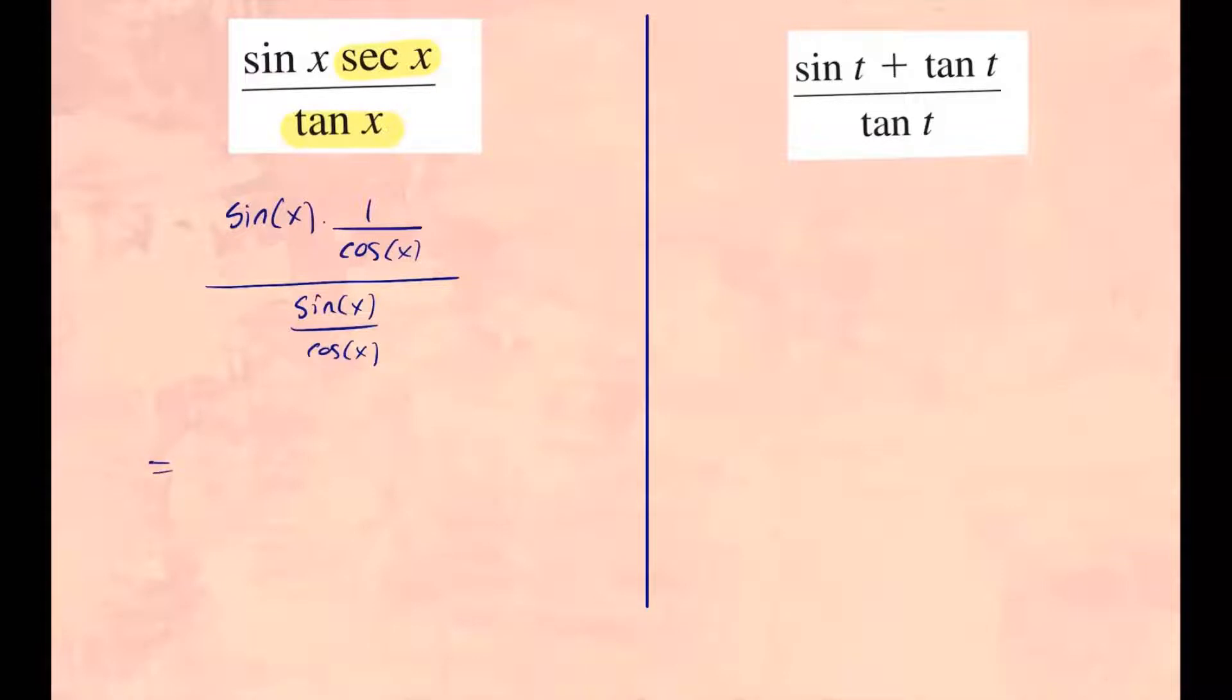On top, you have sine over cosine on top. And on the bottom, you also have sine over cosine. So same thing top and bottom. Well, that's just equivalent to 1. So that expression simplifies to just 1.